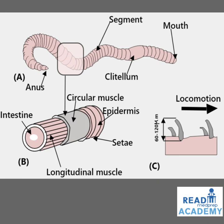In this image you can see the earthworm which has a mouth, the clitellum, segments, and the anus. In cross-section, around the intestine is the endoderm, surrounded by a layer of longitudinal muscle, then circular muscle, and around that is the epidermis which gives out appendages called setae. You can see the setae emerging from the epidermis, which help in locomotion. Chitinous setae in earthworms and suckers in leeches also help in locomotion.